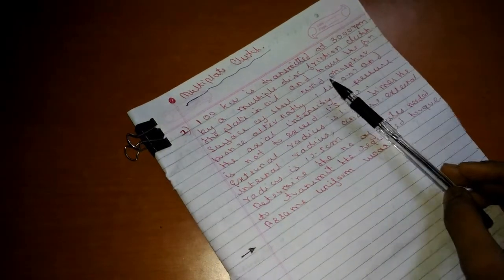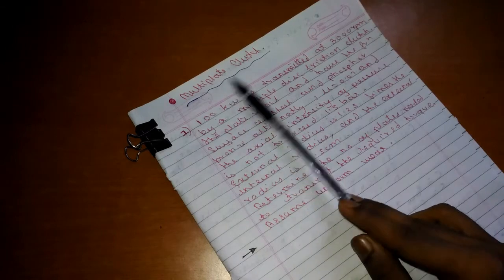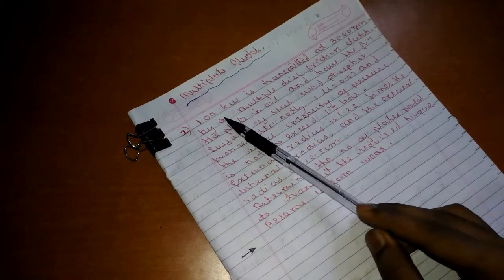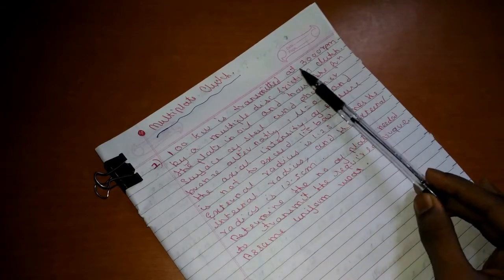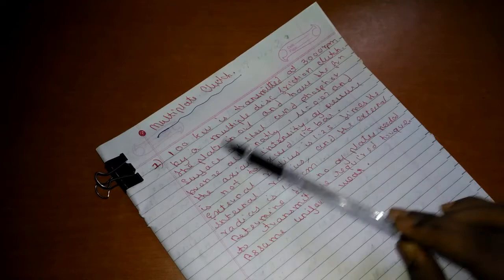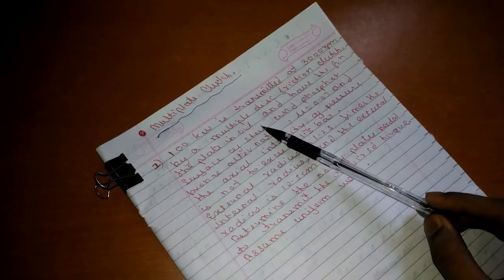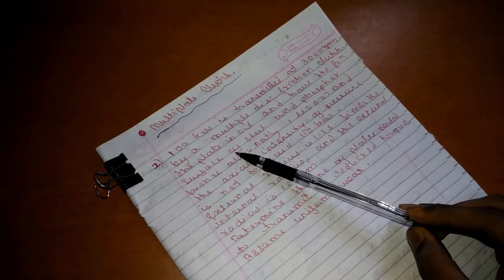Hey guys, now let us discuss the problem one multiple plate clutch. The question is: 100 kilowatt is transmitted at 3000 rpm by a multiple plate friction clutch. The plates are oiled and have friction surfaces of steel and phosphor bronze alternately.